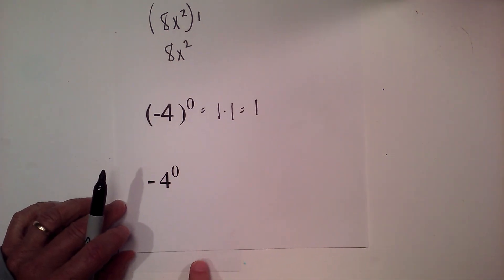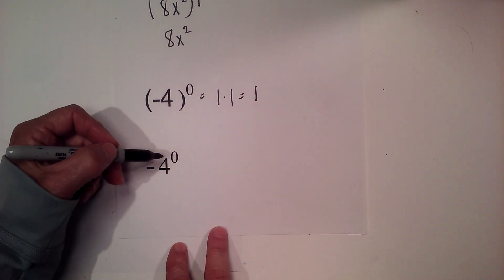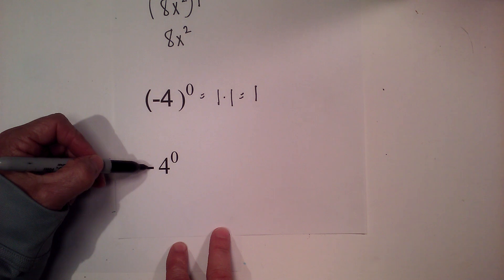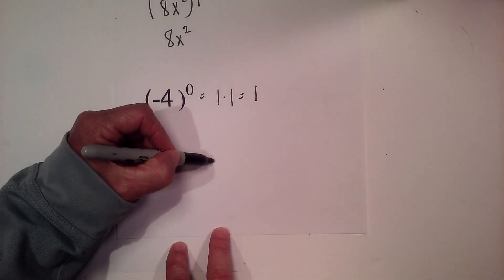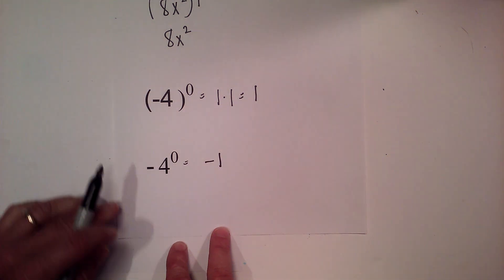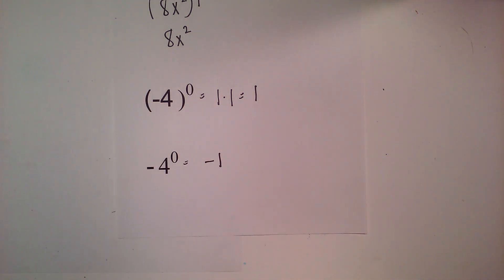Now when you have negative 4 raised to the zero power, the zero only applies to the 4 and not the sign. So I'm going to move the sign over because it does not apply to that. And then 4 to the zero is 1, so it becomes a negative 1.